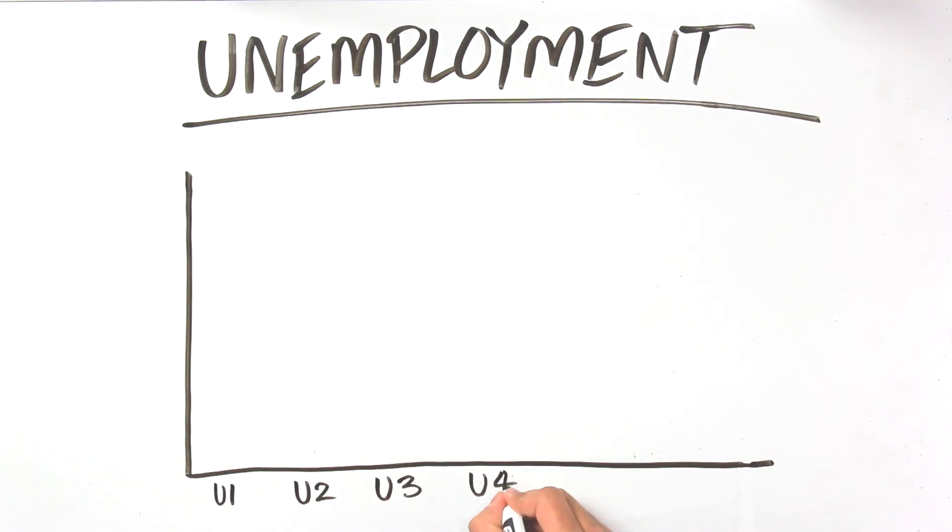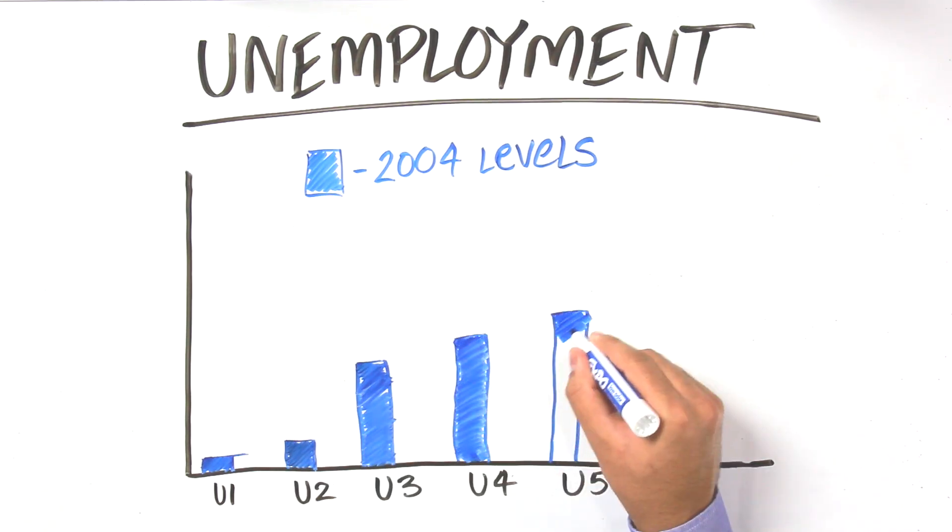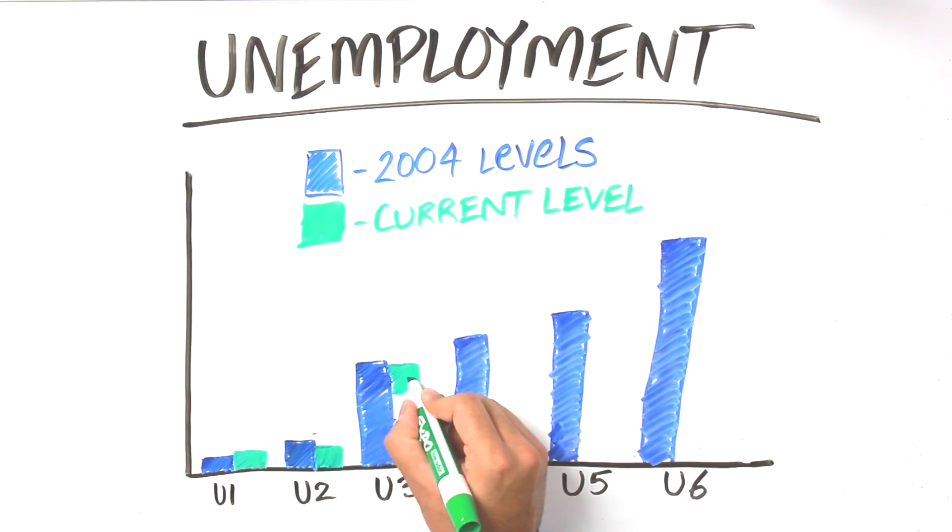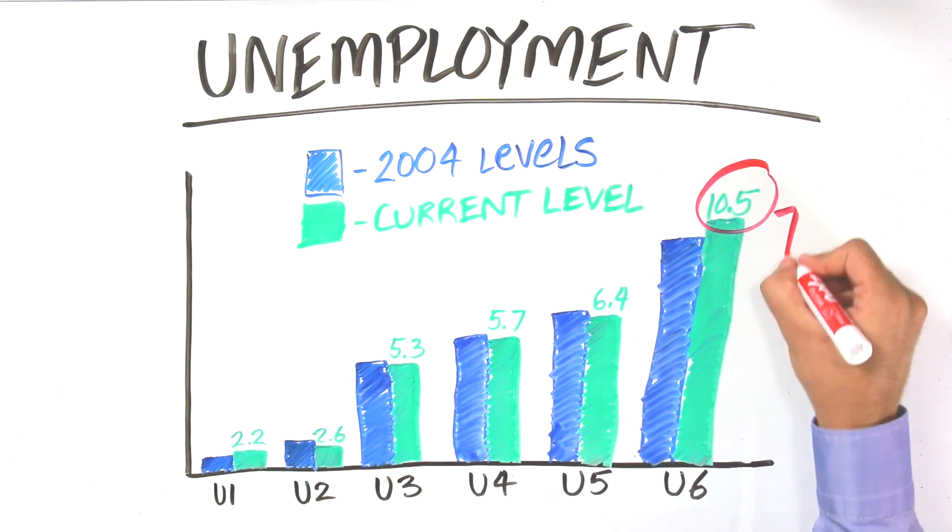When we look at the six broad measures of unemployment, we find that four out of six are lower than they were the last time the Fed hiked. Yes, U6 is still too high, but it has been falling rapidly.